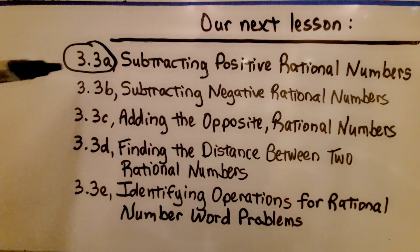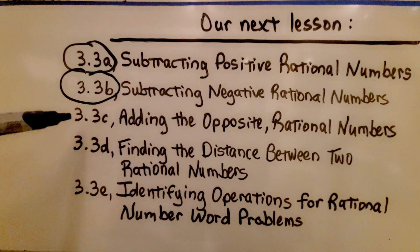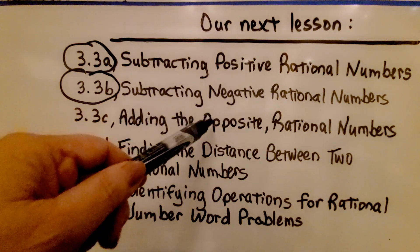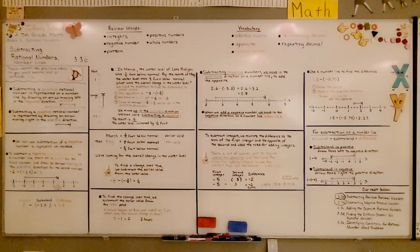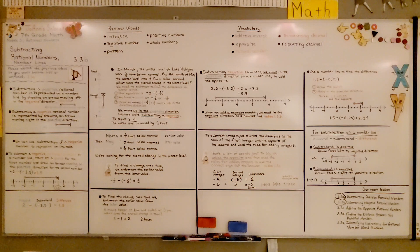We're finished with part b. We're going to move on to part c, which is adding the opposite for rational numbers — and the opposite is the additive inverse. If you're ever feeling lost, you can always re-watch the video or watch the previous videos to catch up. Have a great day and join me for the third part of the lesson. Bye!